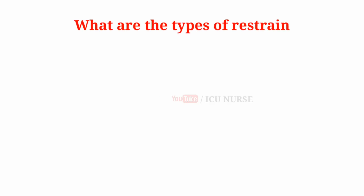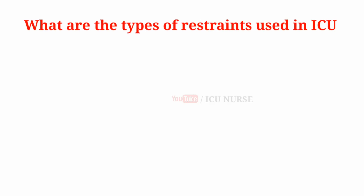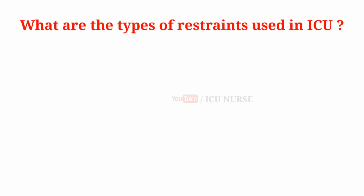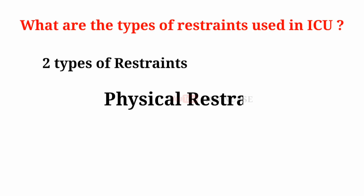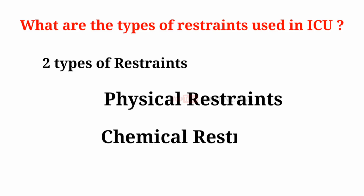What are the types of restraints used in ICU? There are two types of restraints used in ICU: Physical Restraints and Chemical Restraints.